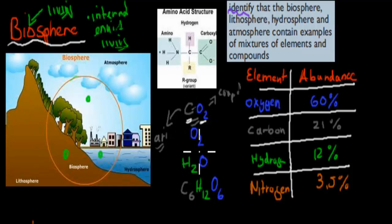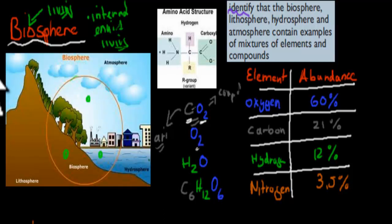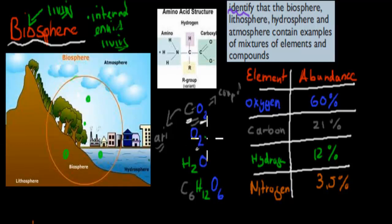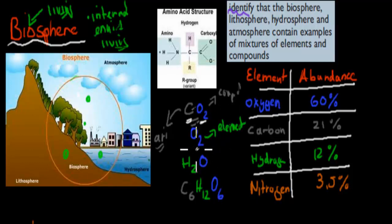We have oxygen. We can find oxygen in the air we live in — so the atmosphere — but also the hydrosphere. Oxygen is an example of an element, because even though it is written as O2, there's only one type of atom in it, which makes it an element.